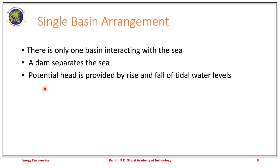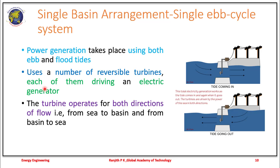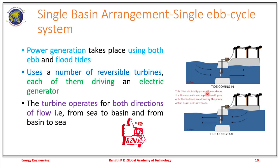In the single basin arrangement, there is only one basin interacting with the sea. The potential head is provided by the rise and fall of the tide, that is the tidal range. In a single ebb cycle, power generation takes place during both the ebb tide and the flow tide, using reversible turbines each driving an electric generator. The turbine operates in both directions — during high tide, water passes through the turbine into the basin, and as the tide recedes, the collected water is let back, during which power is also extracted.